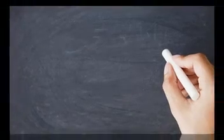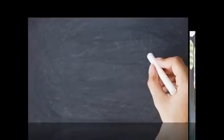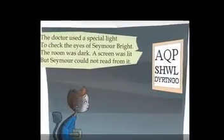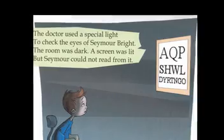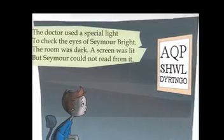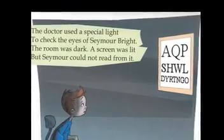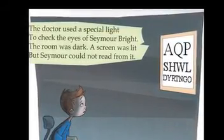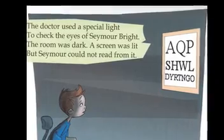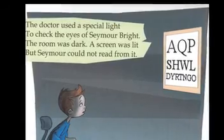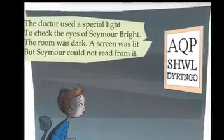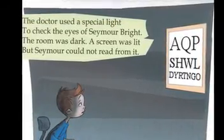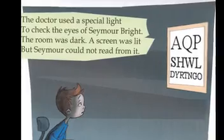Astigmatism involves the front of the eye — the cornea. The surface of the cornea is not perfectly round. If you shine light through something which is not perfectly round or oval-shaped, much like happens in astigmatism, the image will get spread outward. So when it lands on the retina, it will not be defined.